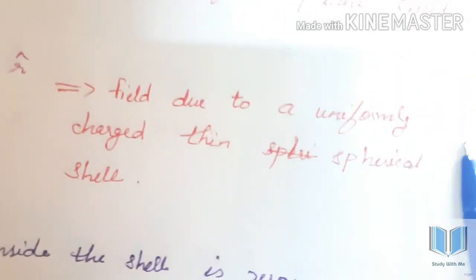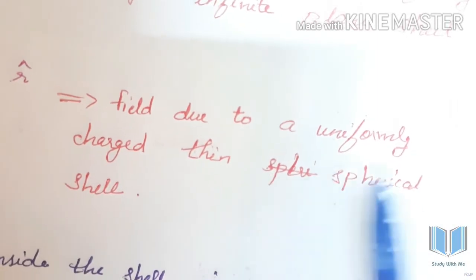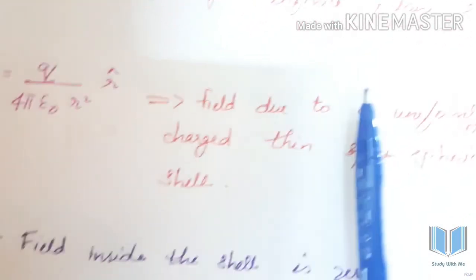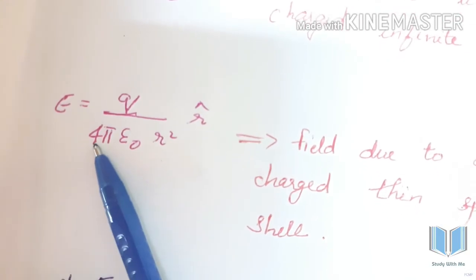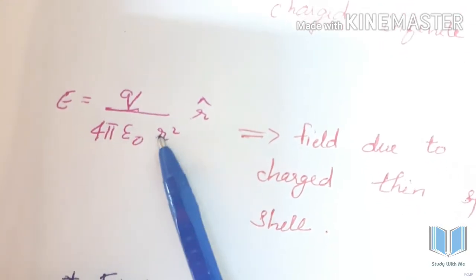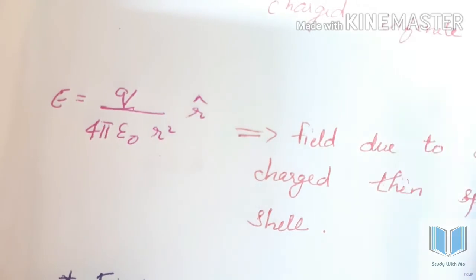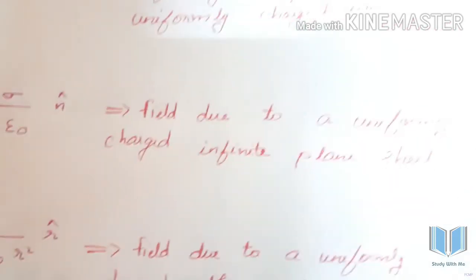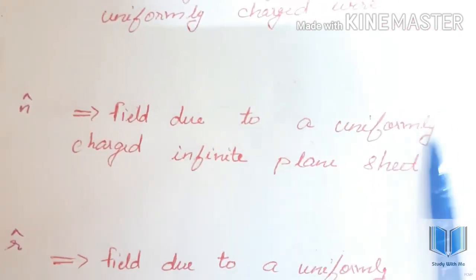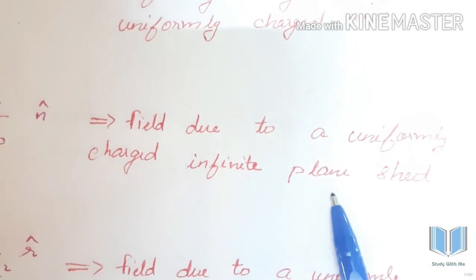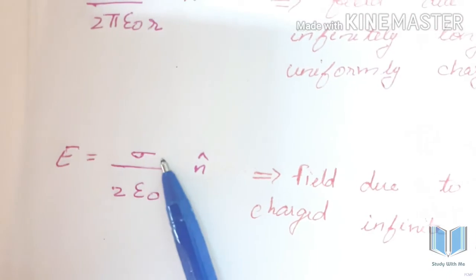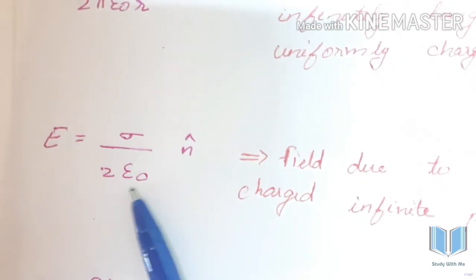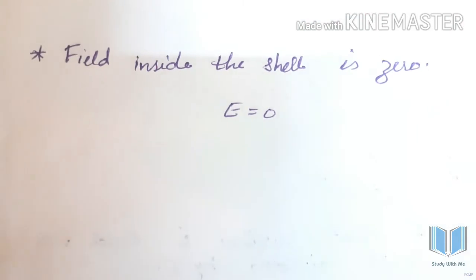Next application: field due to a uniformly charged spherical shell. The equation is E equal to q by 4πε₀ r squared into r-hat. Field due to a uniformly charged thin plane sheet is equal to sigma by 2ε₀ into n-hat.